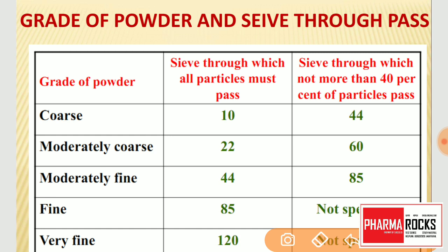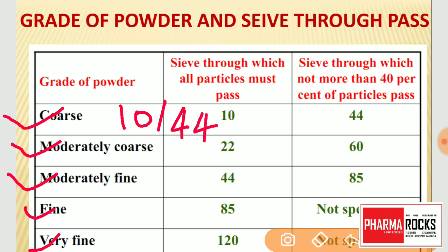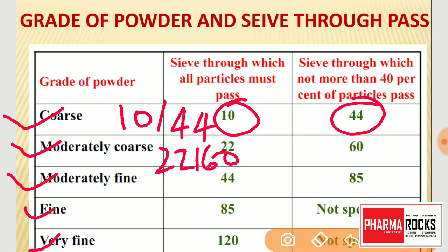To summarize the grade of the powder, there are five types: coarse powder, moderately coarse, moderately fine, fine, and very fine. Coarse powder is called 10 by 44 — all particles must pass through sieve number 10 but not more than 40% through sieve number 44. Moderately coarse powder is 22 by 60. Moderately fine powder is 44 by 85. These are the important ones for the first three grades.